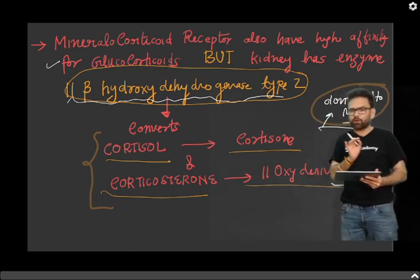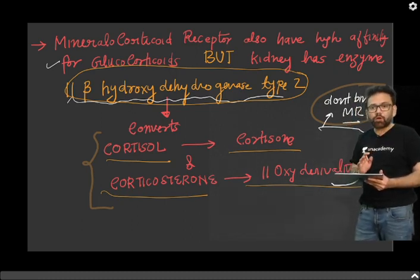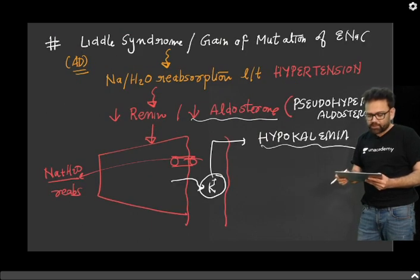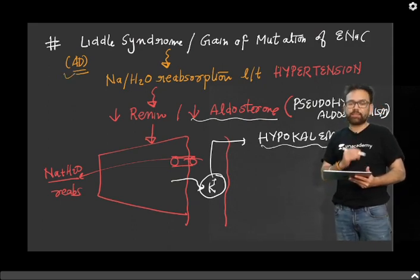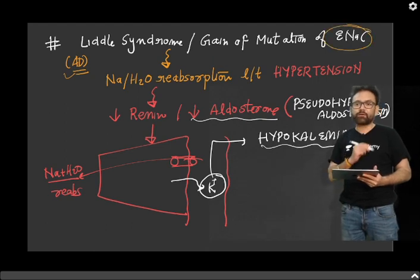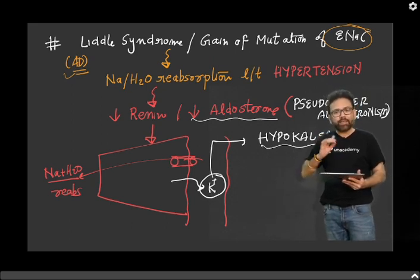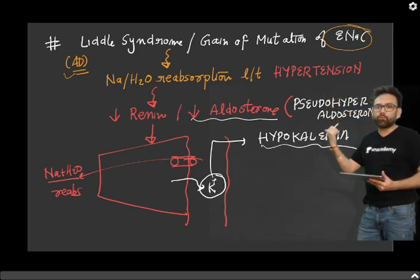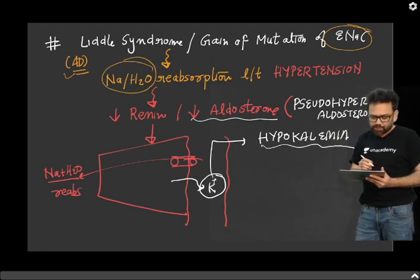So, if you know about aldosterone, you can understand Liddle syndrome more efficiently. Liddle syndrome is an autosomal dominant disease, and it happens when there is a gain-of-function mutation of ENAC. When there is a gain-of-function mutation of ENAC, it means ENAC is working more — and if ENAC is working more, there will be more sodium and water reabsorption.